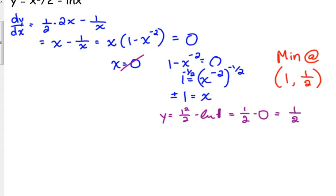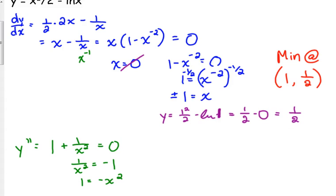We need inflection points, so that's our second derivative. So y double prime is derivative of x is 1. Derivative of negative 1 over x would be positive 1 over x squared. If you need to, make that a negative power, that's fine. We need to just have that equal to 0. So solving that, we have 1 over x squared equals negative 1, in this case, I'm going to multiply both sides by x squared, so negative 1 is equal to x squared, is that possible? Can x squared equal a negative number? No. Not possible, so no inflection points.